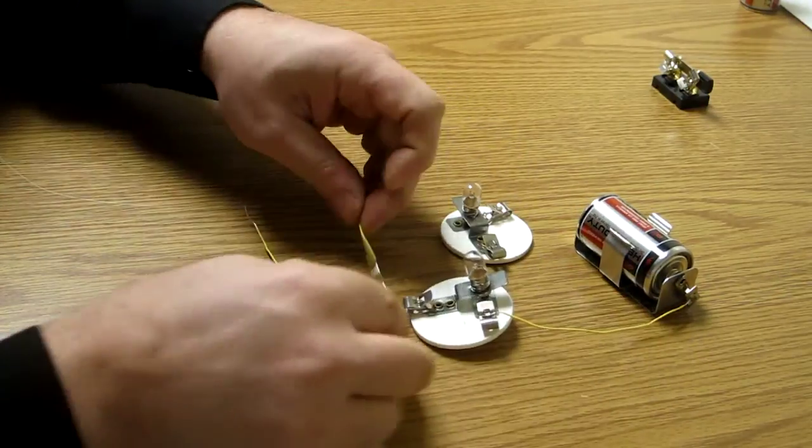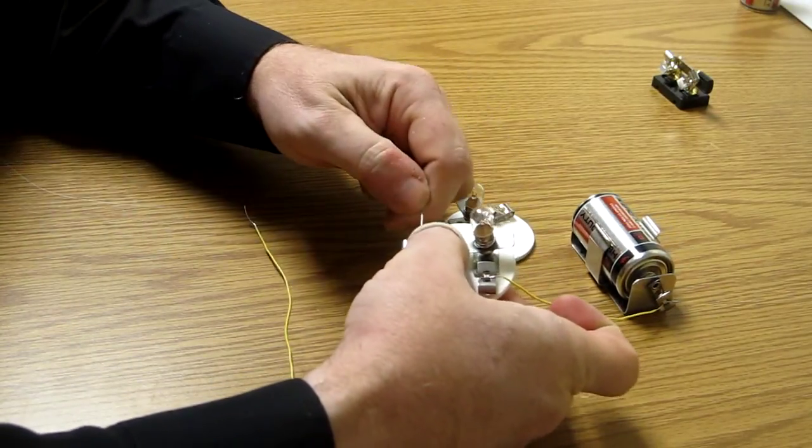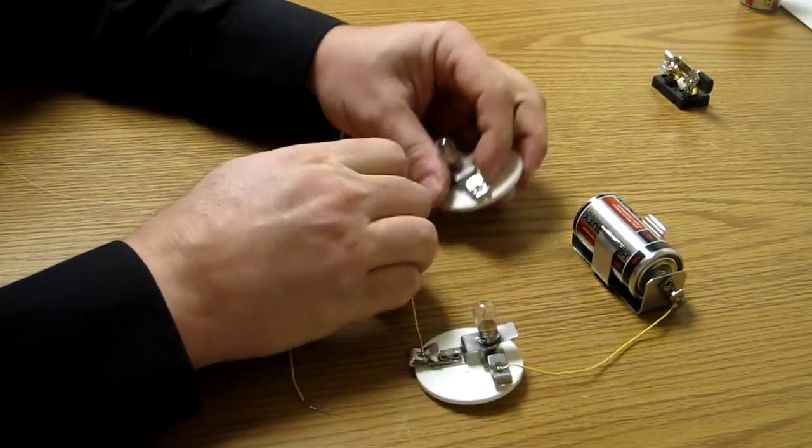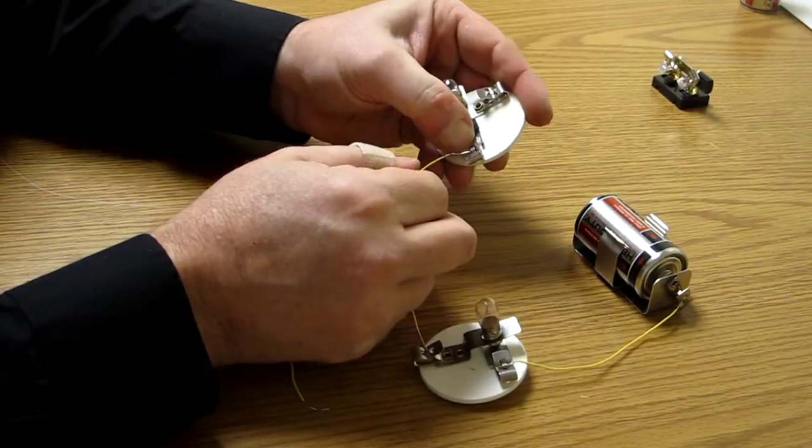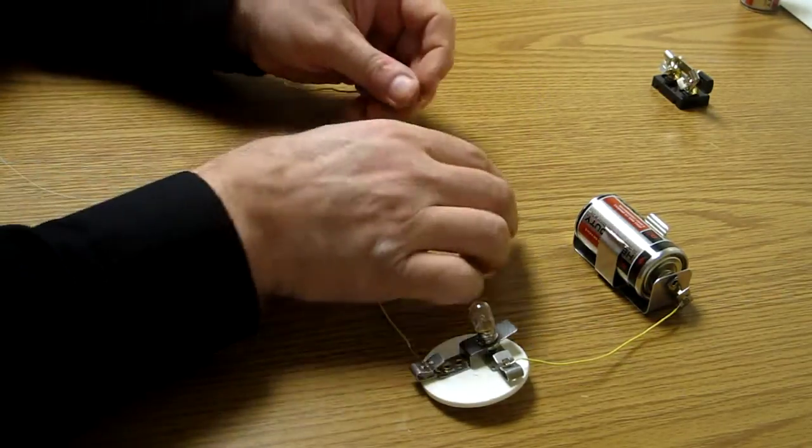I then take my next wire, connect it into the Fondstock clip on the bulb, and I just keep adding. Push the other end of the wire into the Fondstock clip on the second bulb.